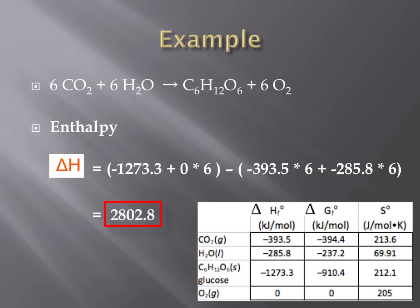Plug all of these numbers into a calculator, and you would arrive at a delta H of 2,802.8 kilojoules per mole. This number will be utilized later when calculating whether the reaction is endergonic or exergonic.